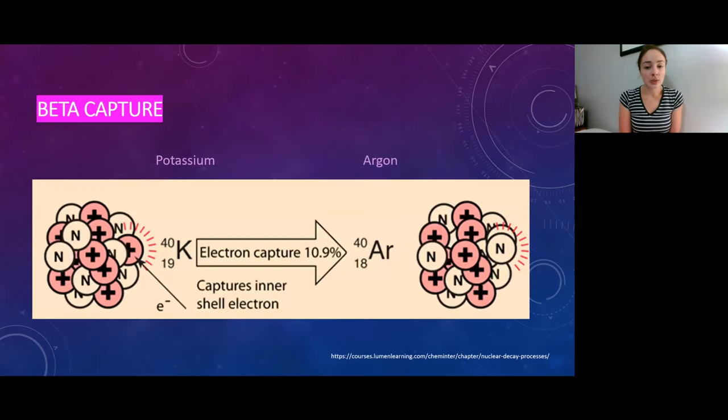And in this slide, you can see beta capture in this depiction, as potassium-40 captures one of its inner shell electrons, turning one of its protons into a neutron, causing the proton number to go down, but the neutron plus proton number to stay the same, which causes the formation of argon-40.